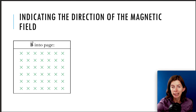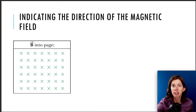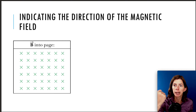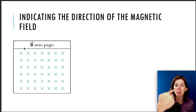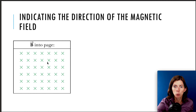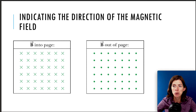Because magnetic field is a direction, and sometimes we will be working in three dimensions, sometimes the magnetic field is not just going to be going up, down, left, or right. Sometimes the magnetic field might be going into the page or out of the page towards you. So if it's going into the page, we use an X. If the magnetic field is going out of the page, we use a dot.